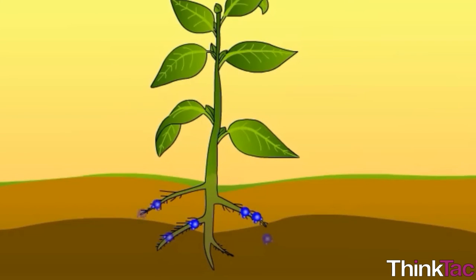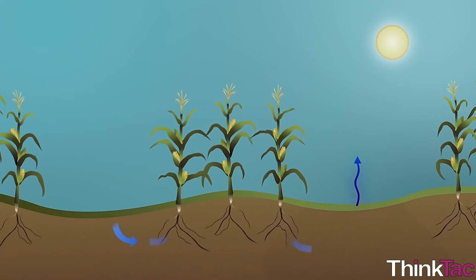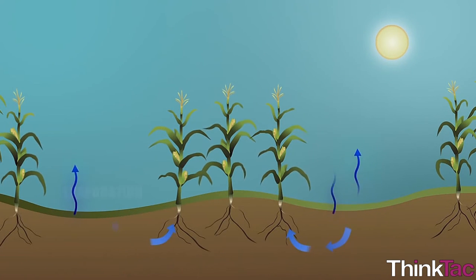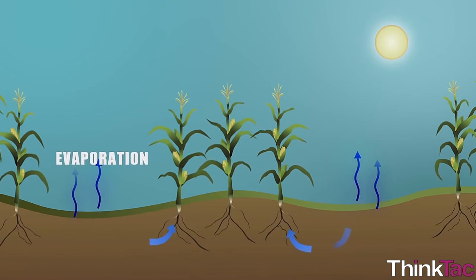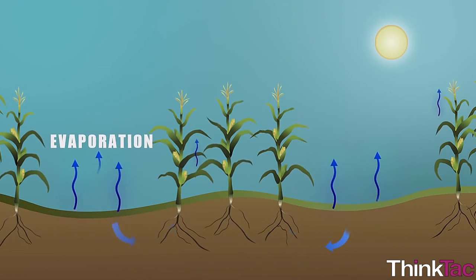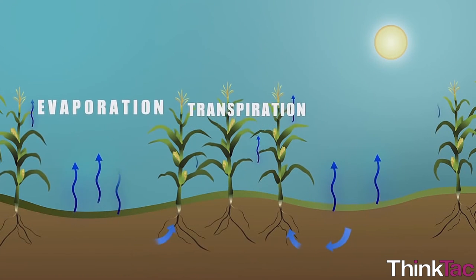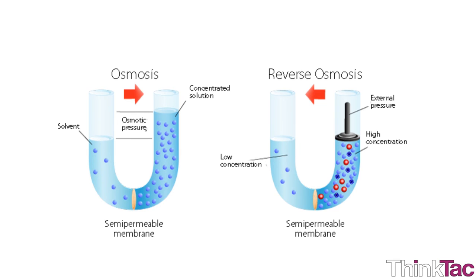Water is brought up the tree and its branches. Evaporation and transpiration happen from the leaves, creating some depressurization which helps in pulling more water up. Osmotic pressure, which is caused in the roots or at other places inside the plants or trees, also aids in the drawing of water.